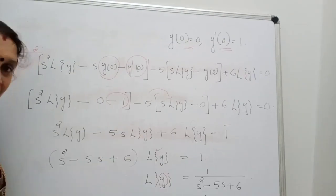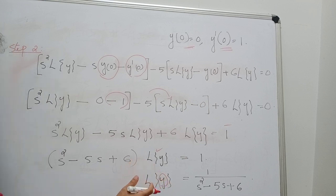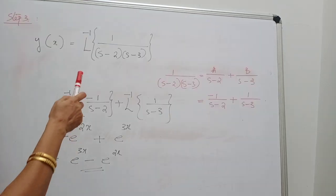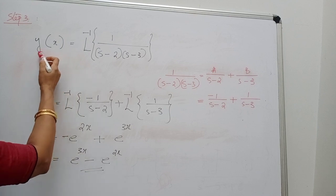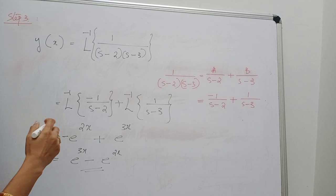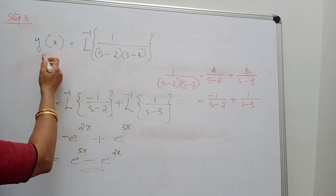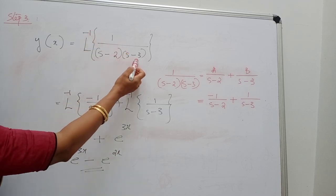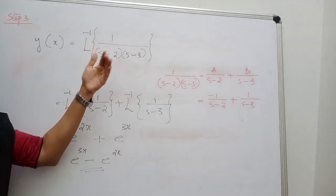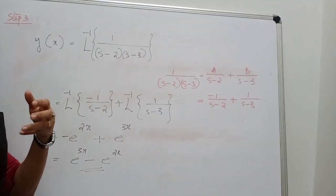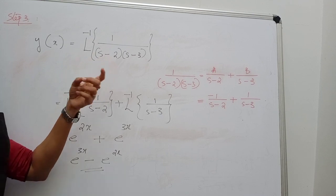Our aim is to find y, so from L{y} we apply step 3: take inverse Laplace transform. y(x) = L⁻¹{1/[(s−2)(s−3)]}. Here we use the partial fraction method. We write 1/[(s−2)(s−3)] = A/(s−2) + B/(s−3). To find A, set s = 2: A = 1/(2−3) = −1. To find B, set s = 3: B = 1/(3−2) = 1. So the partial fraction form is −1/(s−2) + 1/(s−3).